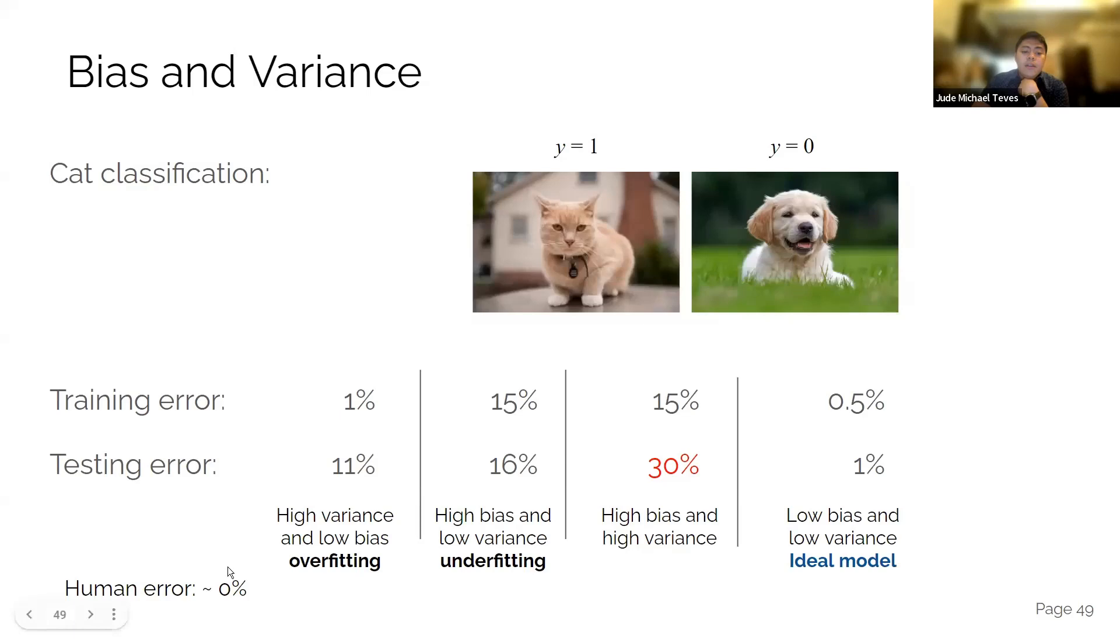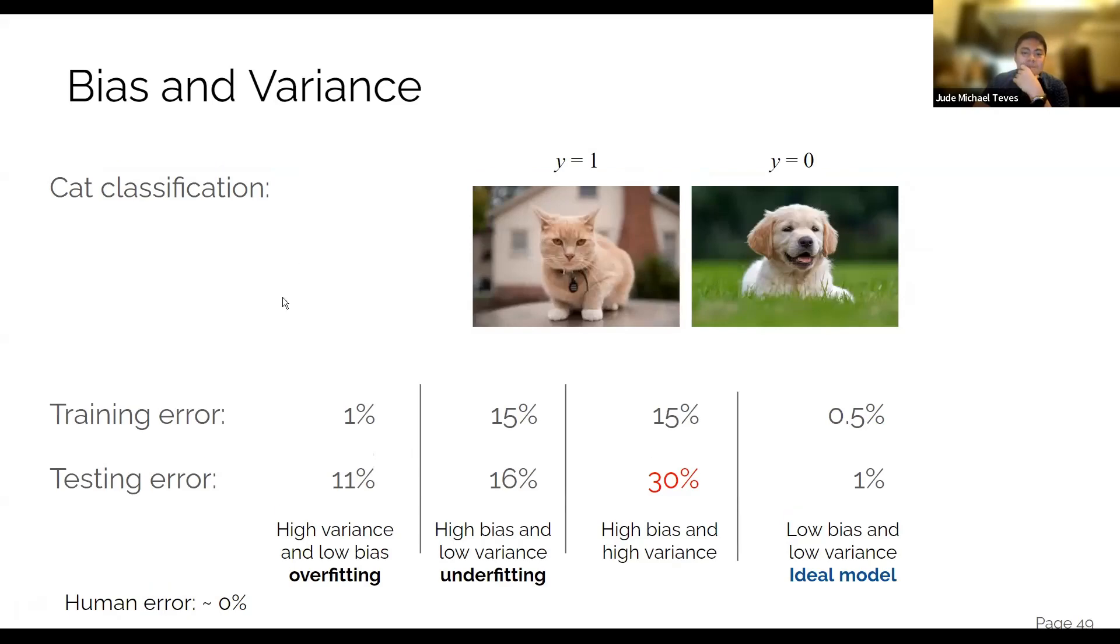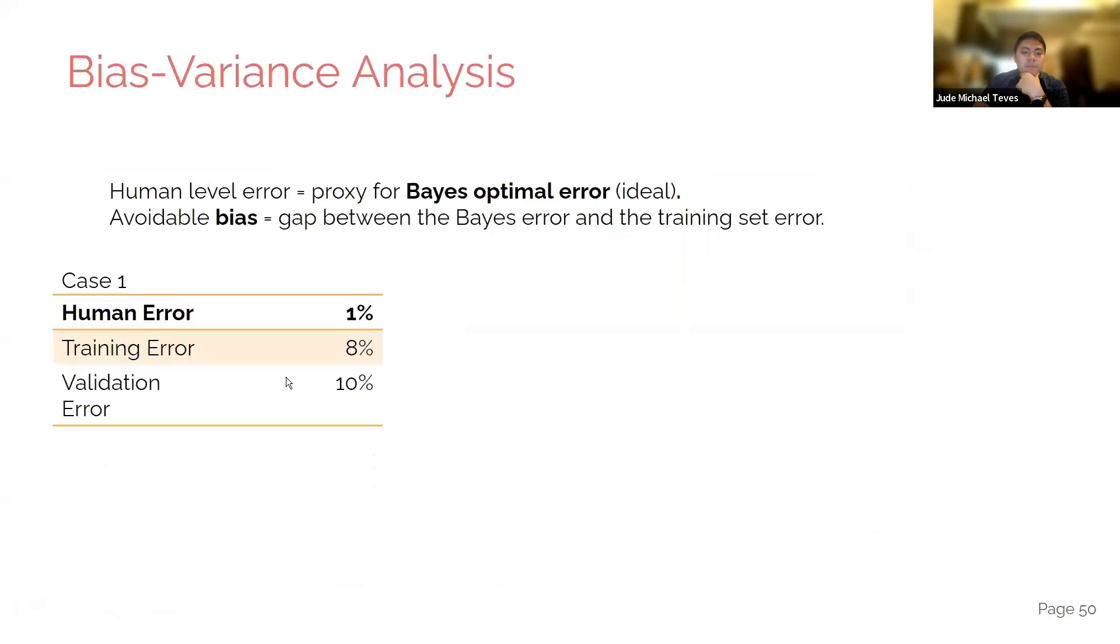But the question is, how do you identify this? The baseline. The human error. Well, you do research. You do comparisons. So what is the typical error out there? If you can. Yeah. Human level error is the proxy for base optimal error or the ideal error. The avoidable bias is the gap between the base error or the ideal error and the training set error. There's the avoidable bias. It's the bias problem.